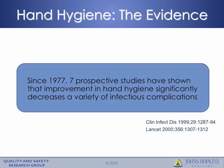Hand hygiene is an important approach to preventing all nosocomial infections, and prevention of CLABSIs is no exception. Since 1977, seven prospective studies have shown that improvement in hand hygiene significantly decreases a variety of infectious complications. Hand hygiene is easy to perform, particularly with the introduction of alcohol-based hand cleaners in the hospital setting, and should be a critical component in the process of placing a central line or in doing central line maintenance.